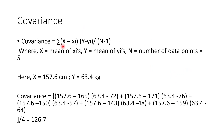Covariance is given by the formula: the summation of (x̄ minus xᵢ) times (ȳ minus yᵢ), divided by n minus 1. Here x̄ is the mean of all your x values and ȳ is the mean of all your y values, and n is the number of data points, which is five. We subtract one because this is a sample covariance. For population covariance you divide by n, not n minus 1.